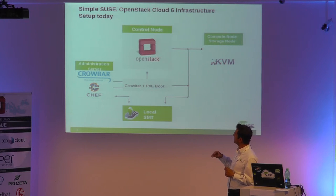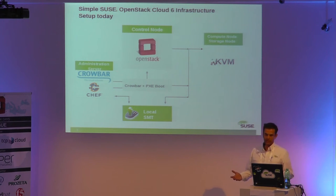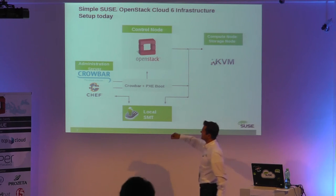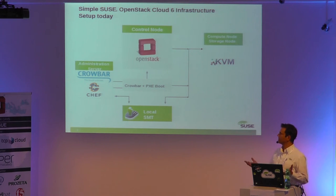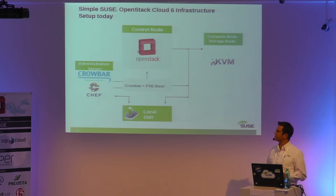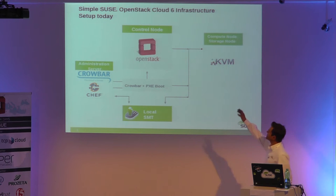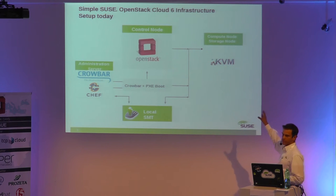In SUSE OpenStack Cloud, we have a minimum requirement of nodes with the initial setup infrastructure. We are providing an administration server with a tool called Crowbar — comparable to TripleO. The approach is that we discover nodes in a network environment, allocate those nodes, and put roles on them. We have a control node hosting the OpenStack services, and then compute and storage nodes.